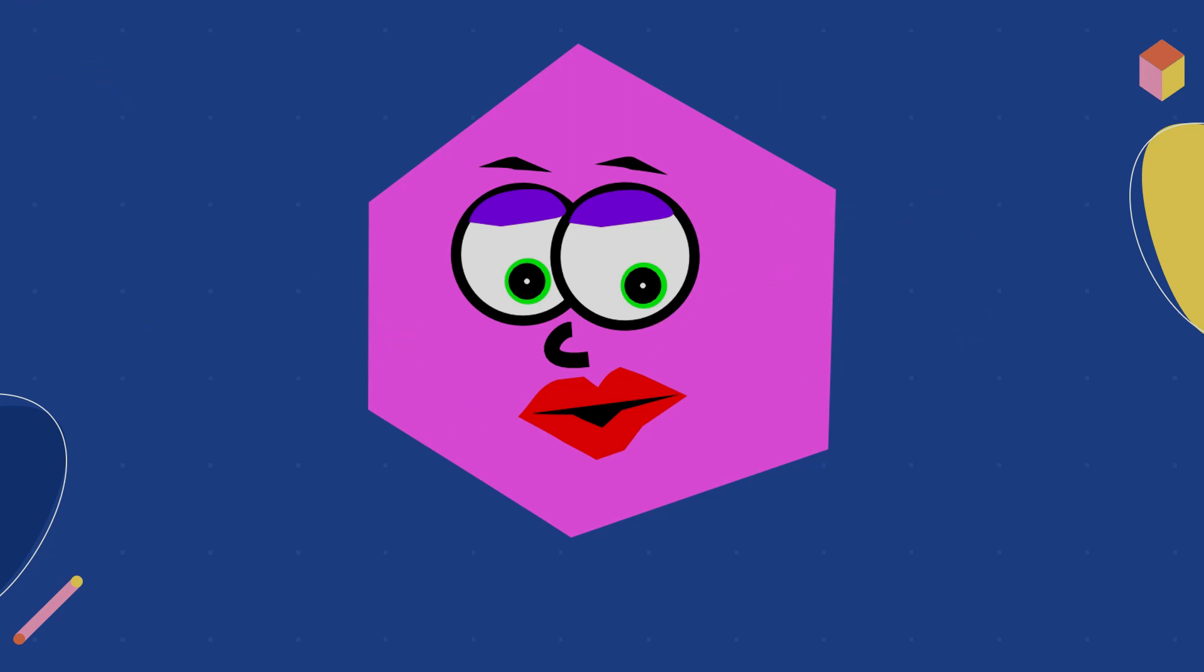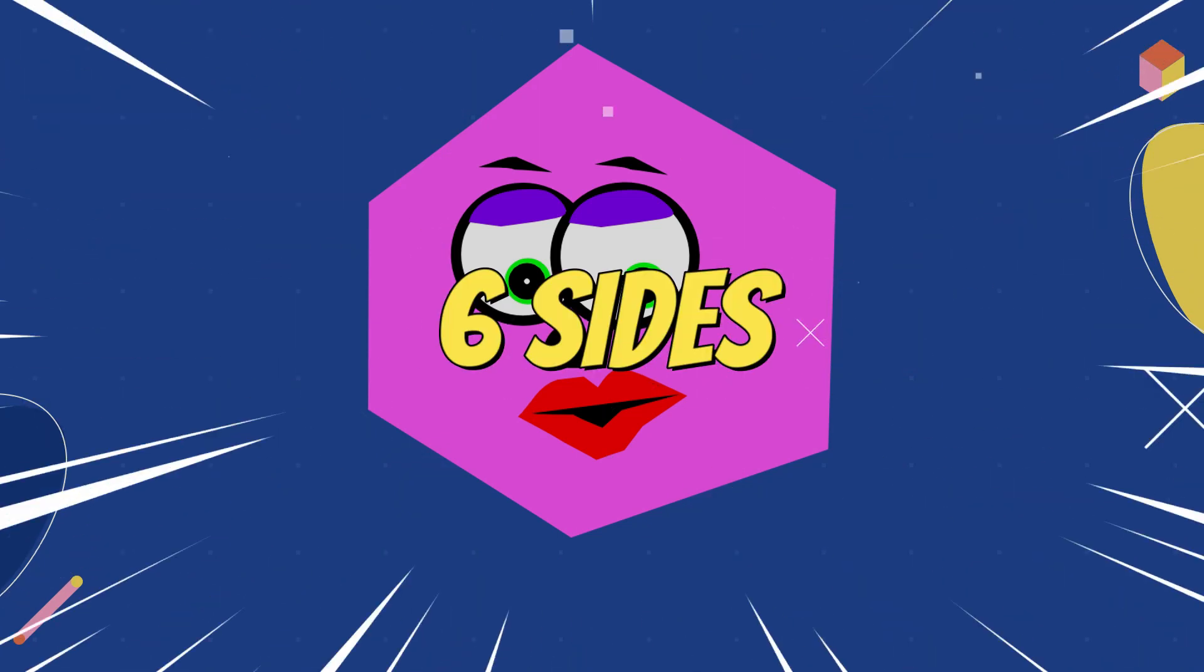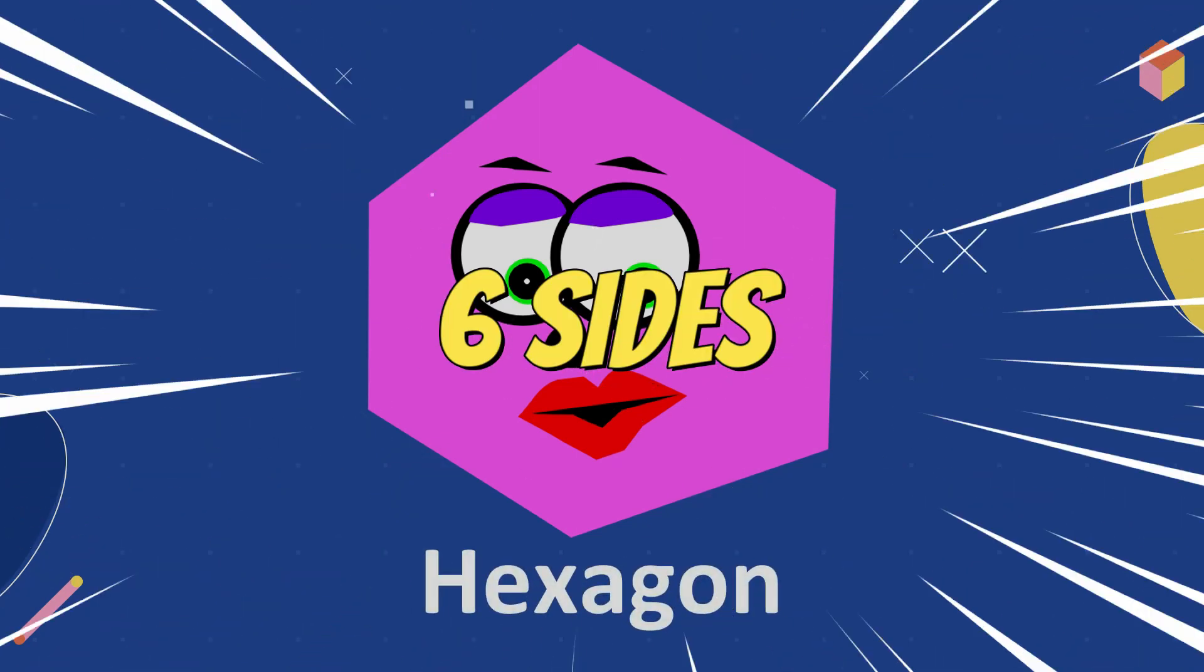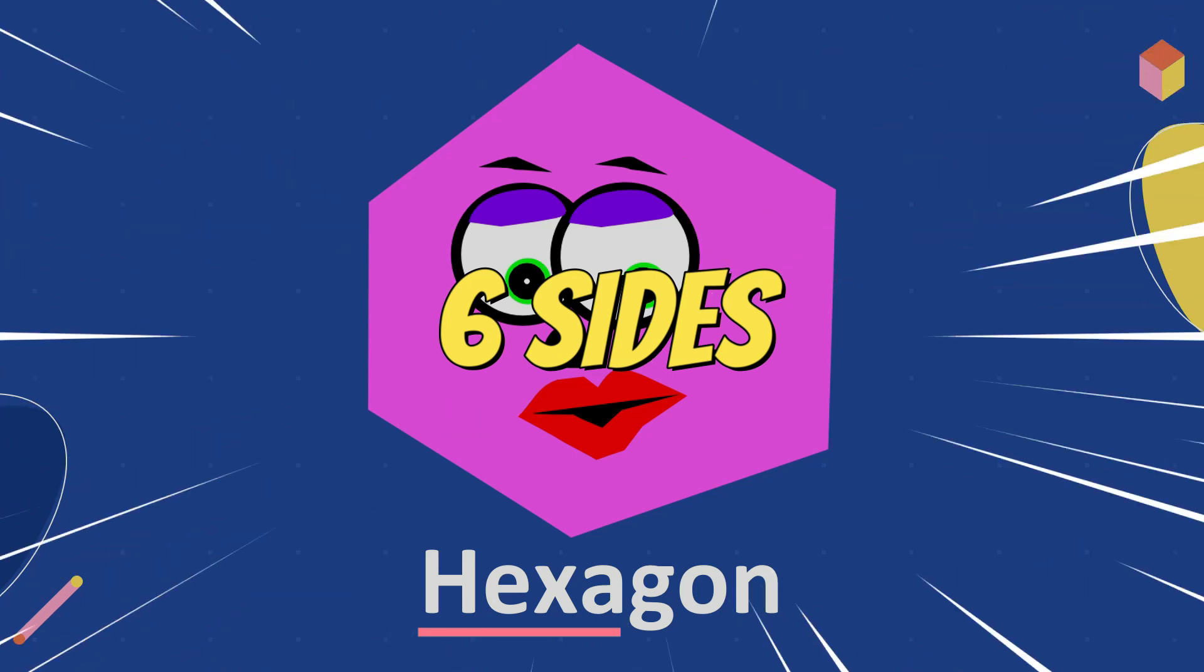Let's count the number of sides. One, two, three, four, five, six. Six sides is hexagon. Hexa means six. Hexagon.